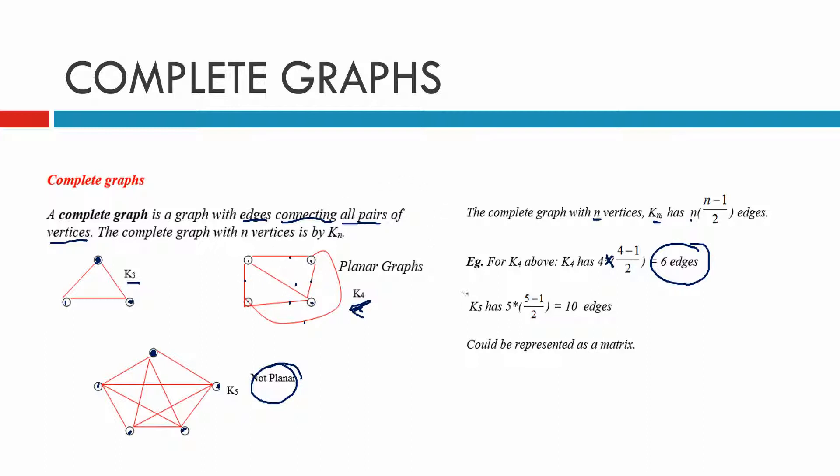For the other one, k of 5, then we have 5 times 5 minus 1 divided by 2, which means we can have 10 edges.